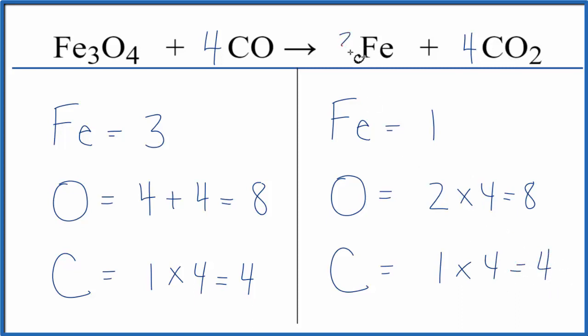And we said we could just put a three in front of the Fe. One times three. That would give us three irons.